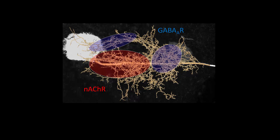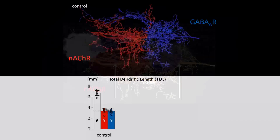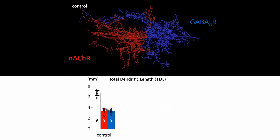Therefore, this neuron contains two distinctly separate synaptic input streams. If we divide this dendritic reconstruction in half between the first proximal and the last distal dendrite, we see that precisely 50% of all dendrites are allocated to the proximal cholinergic input domain, whereas the other 50% of all dendrites are allocated to the distal GABAergic input domain.